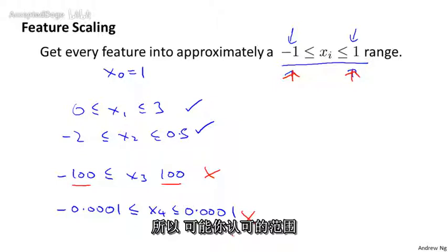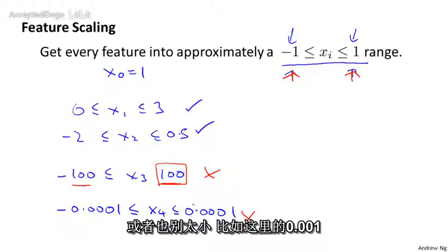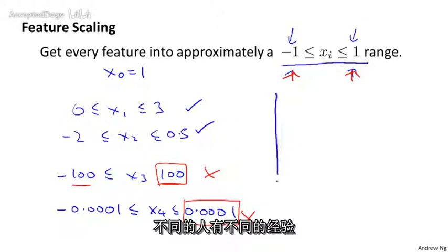So you want the range of values to be a bit bigger than +1, a bit smaller than +1, but just not much bigger, like +100 here, and not too much smaller, like 0.0001. Different people have different rules of thumb...